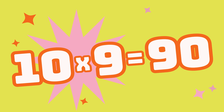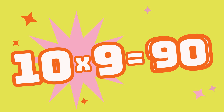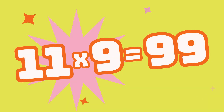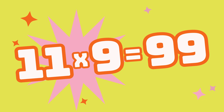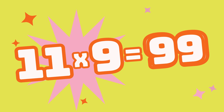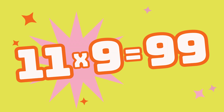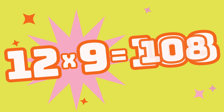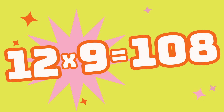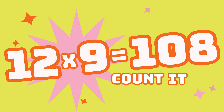7 multiplied by 9 is 63. 8 multiplied by 9 is 72. 9 multiplied by 9 is 81. 10 multiplied by 9 equals 90. 11 multiplied by 9 equals 99. 12 multiplied by 9 is 108.